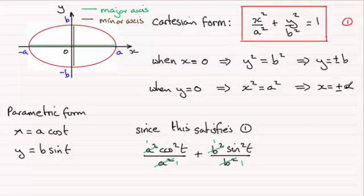And you can see that I can cancel out the a squareds and the b squareds. And what I'm left with is cos squared t plus sine squared t. And that's a familiar identity - it's equal to 1.